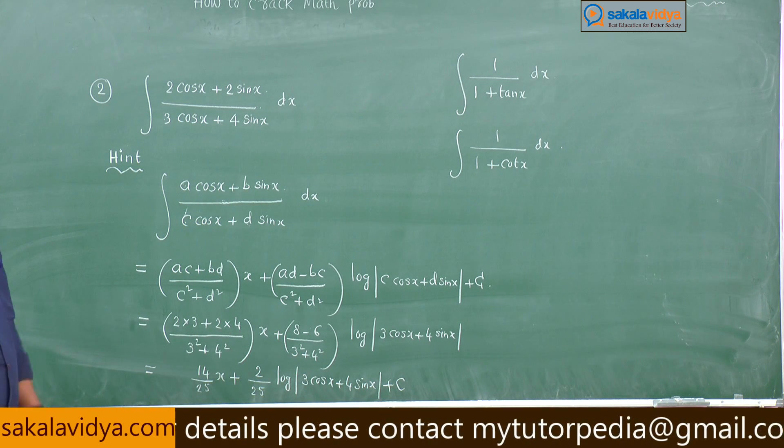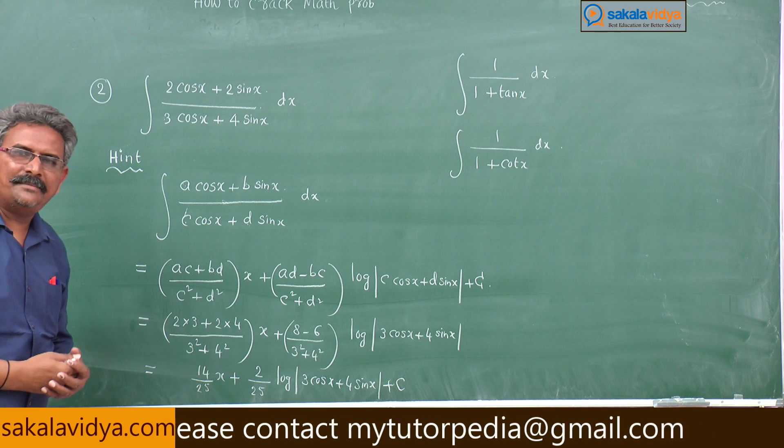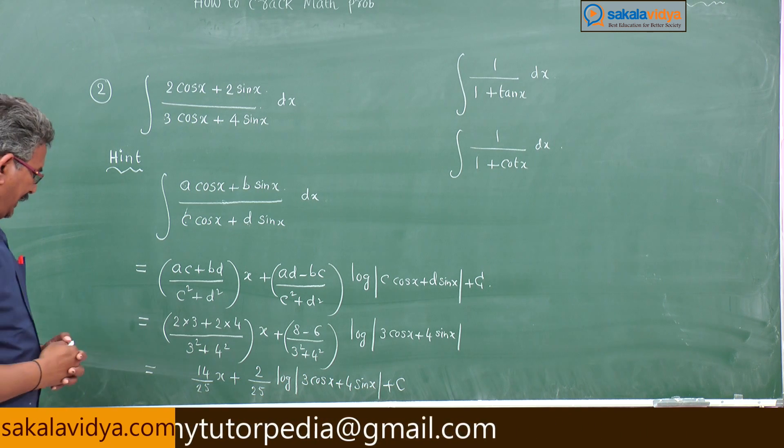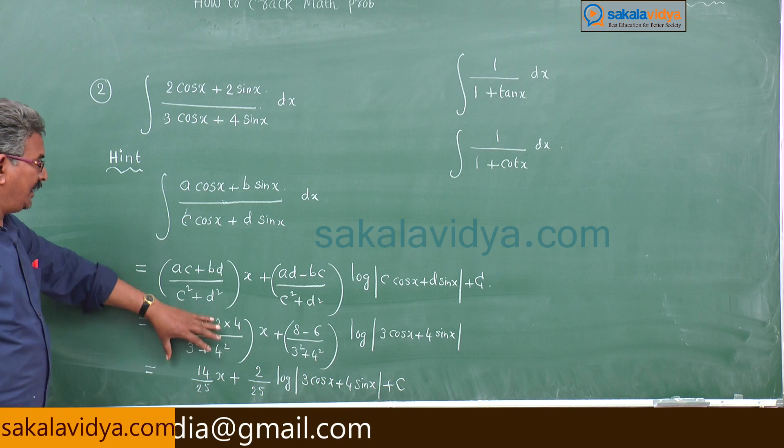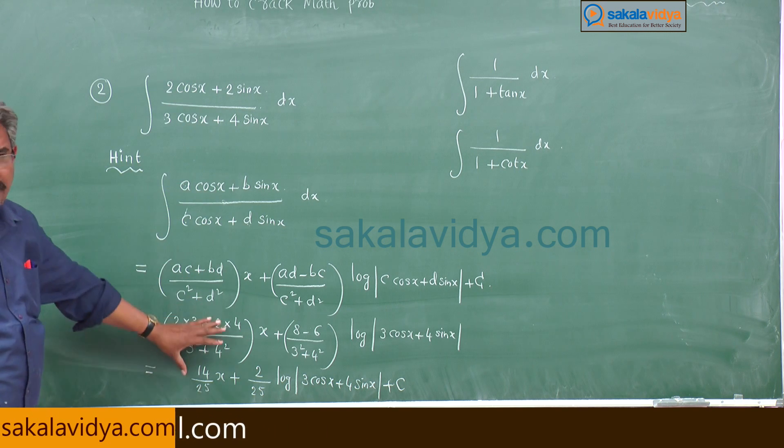So this is 2 by 25 log mod 3 cosx plus 4 sinx plus constant of integration. See how it is a very simple problem. In this way you have to do this kind of shortcuts.